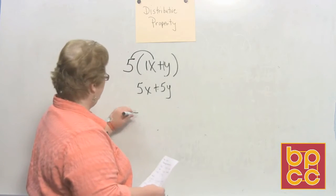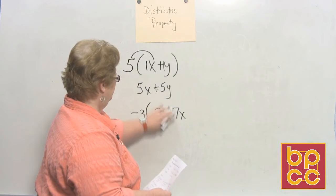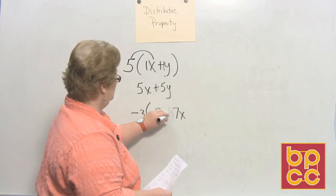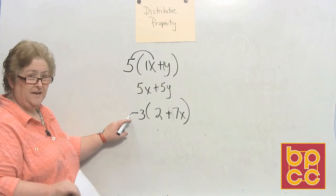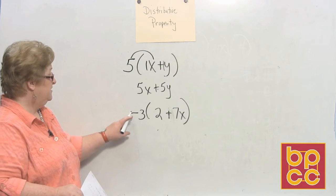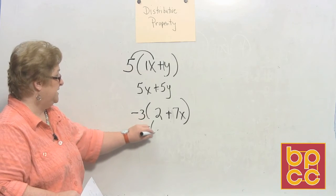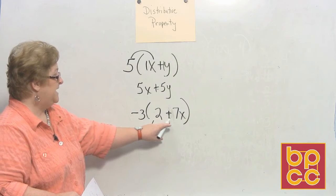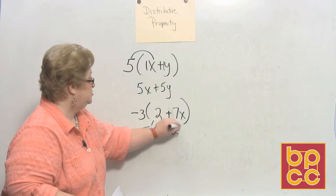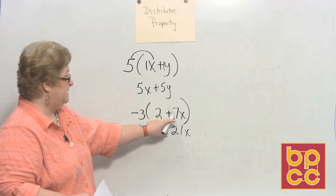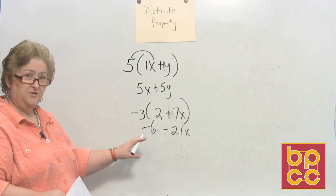Let's try another one. Let's say that I have negative 3 times 2 plus 7x. Now we're going to multiply the outside. Keep in mind we're multiplying, so you've got to watch your signs. A negative 3 times a positive 2 is a negative 6, and a negative 3 times a positive 7x is a negative 21x. One negative times a positive is negative. So we're finished — that's all it is to distribution.